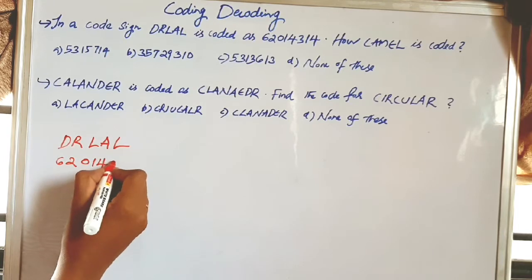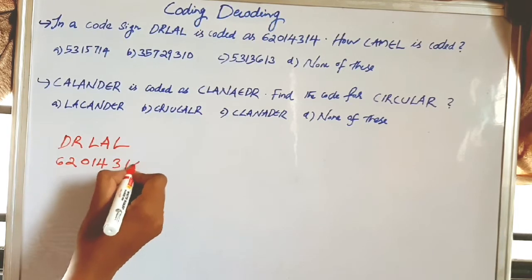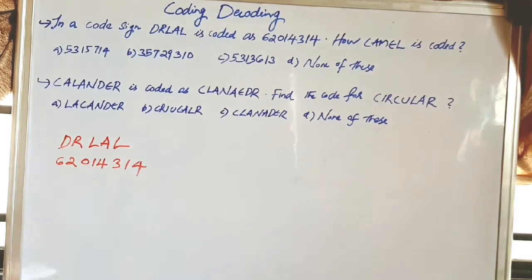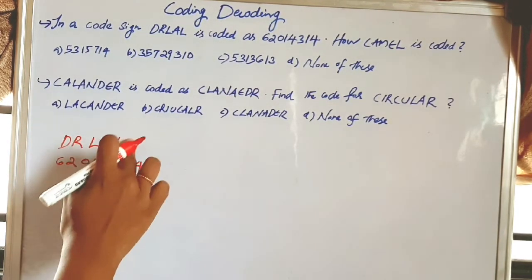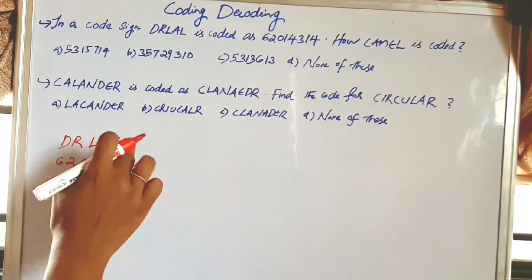The answer shown is 62014314. In the case of direct coding, if you are coding a word as a number, there are 5 letters to consider.